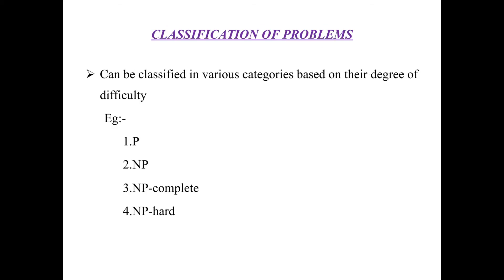For example, the traveling salesman problem is intractable. Problems can be classified into various categories based on their degree of difficulty. These categories are: P, NP, NP-Complete, and NP-Hard.